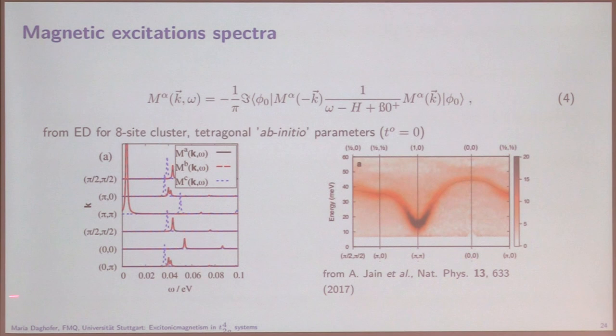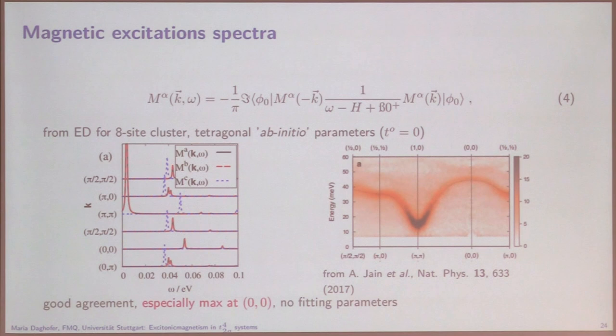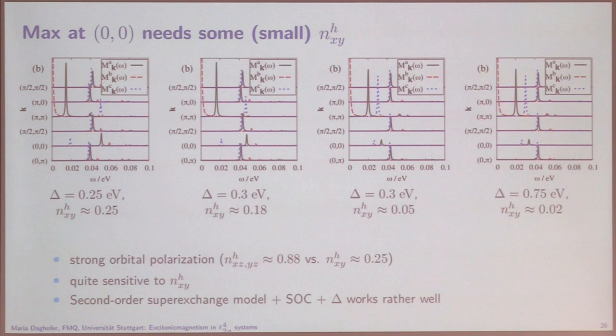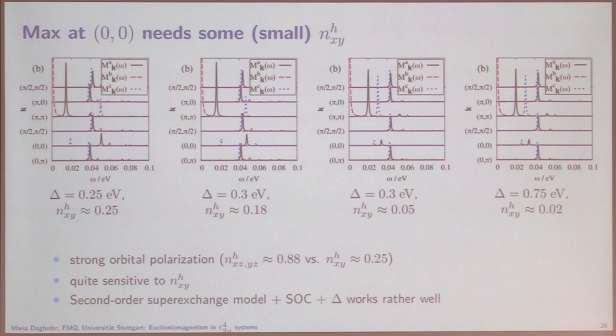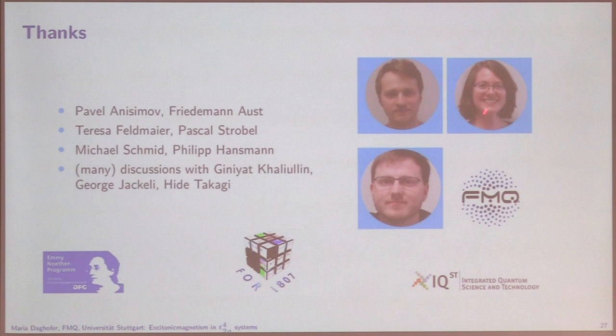We also obtained the second-order superexchange model and calculated magnetic excitation spectra. The spectra agree fairly nicely with experiment considering we have zero fit parameters. We get a maximum at about 50 meV at the gamma point. This maximum is sensitive to the hole occupation in the XY orbital: if we make the crystal field stronger so the spin picture becomes better, this maximum goes down and becomes a local minimum. So having something in XY — 20% or 25% — is crucial. Those involved were Friedemann and Pavel in the first part on triplons, and Teresa and Michi in the second part on model studies and calcium ruthenate.